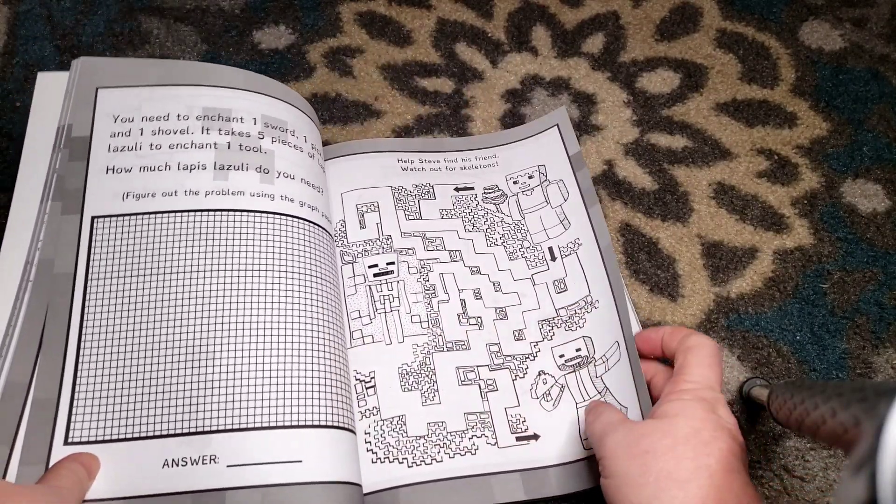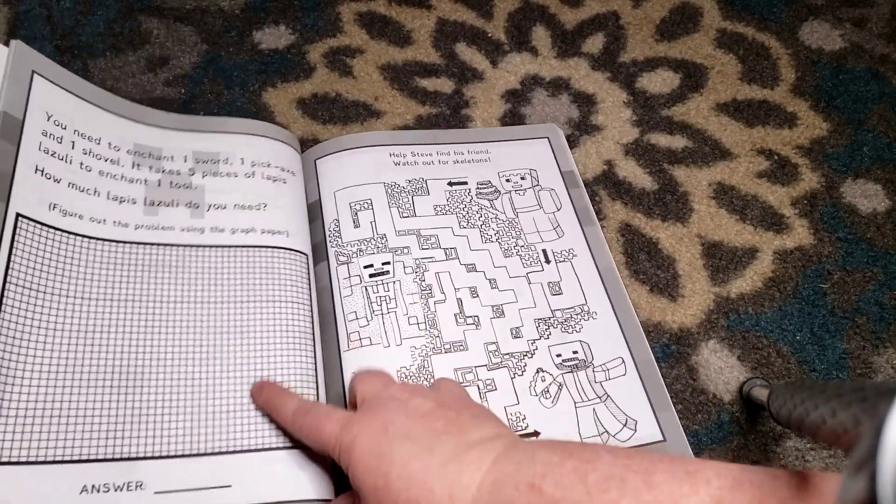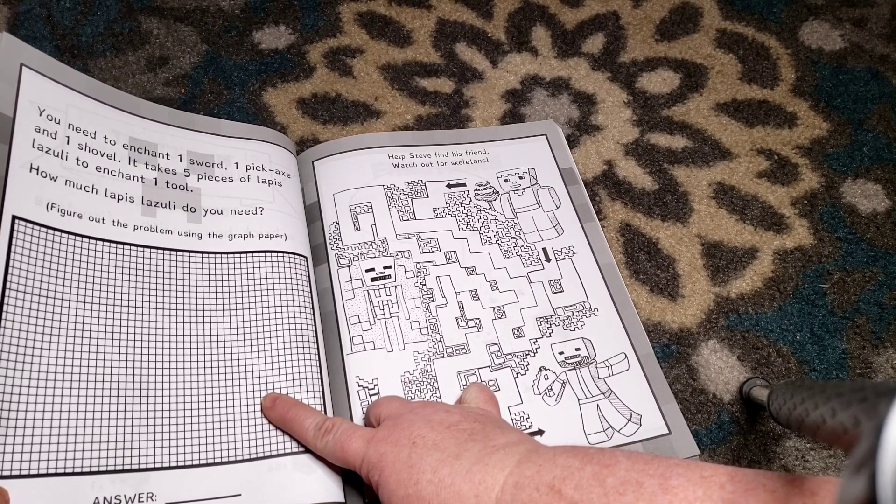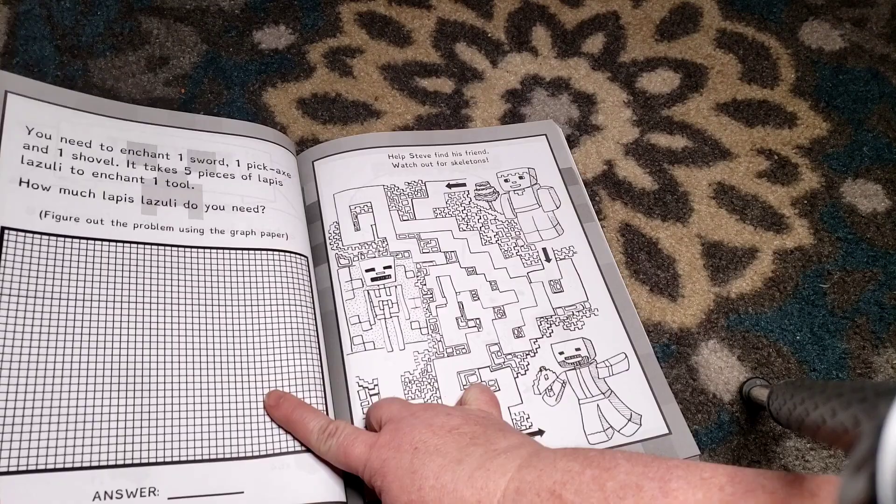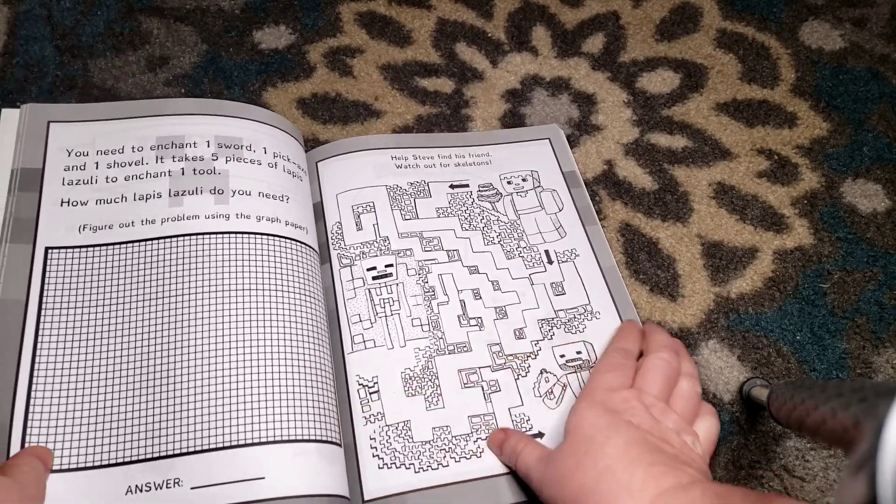Here you've got another maze, and here you need to enchant one sword, one pickaxe, and one shovel. It takes five pieces of lapis lazuli to enchant one tool. How much do you need? Figure out the problem using the graph paper.